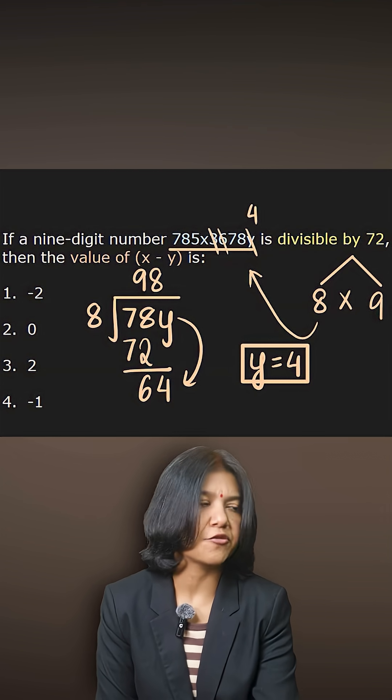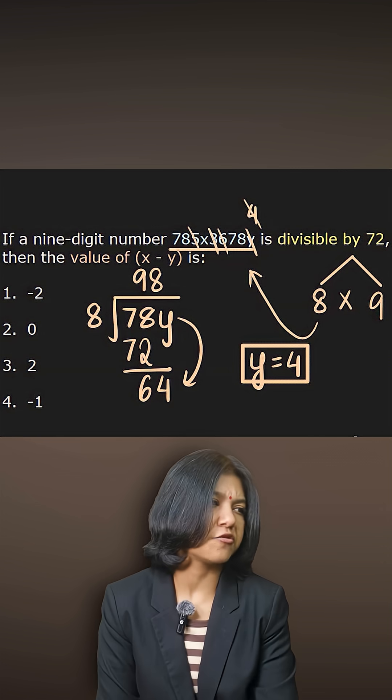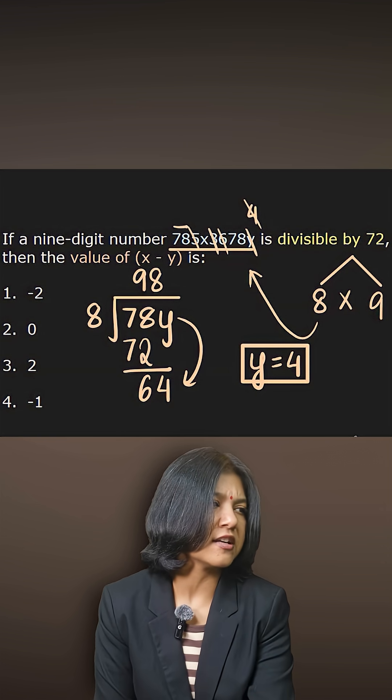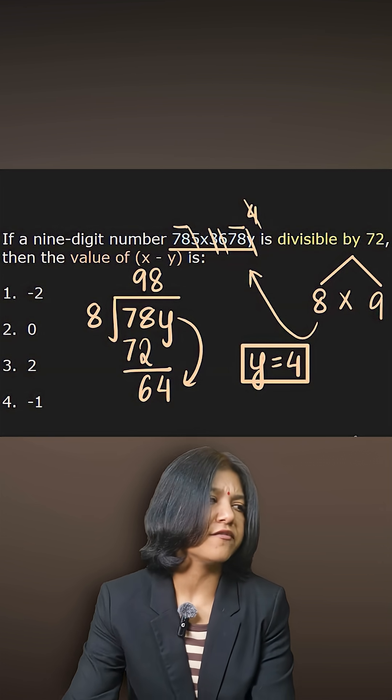6 plus 3 is 9, get rid of it. 5 plus 4 is 9, get rid of it. Now the remaining part is 7 plus 8, which is 15, and another 15. 15 plus 15 is 30.